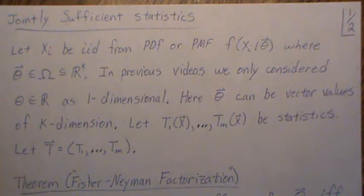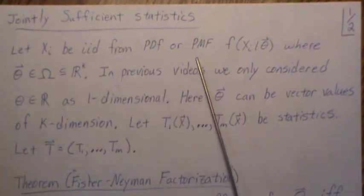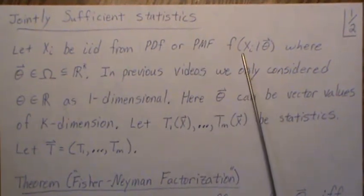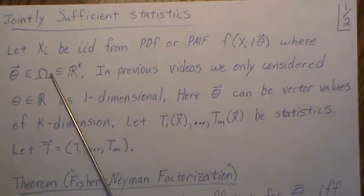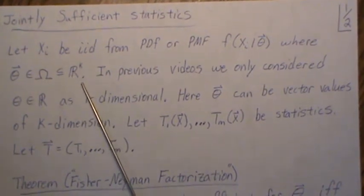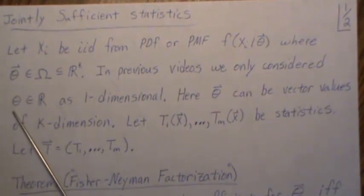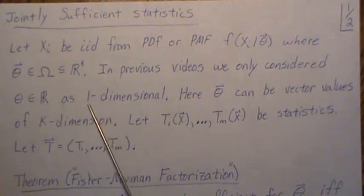This is the next video in a playlist called parameter estimation, and we're going to look at jointly sufficient statistics. Let Xi be IID from a PDF or PMF, f of Xi given theta, where theta can now be vector-valued — living in a parameter space that's a subset of k dimensions. In previous videos we only considered theta as one-dimensional.